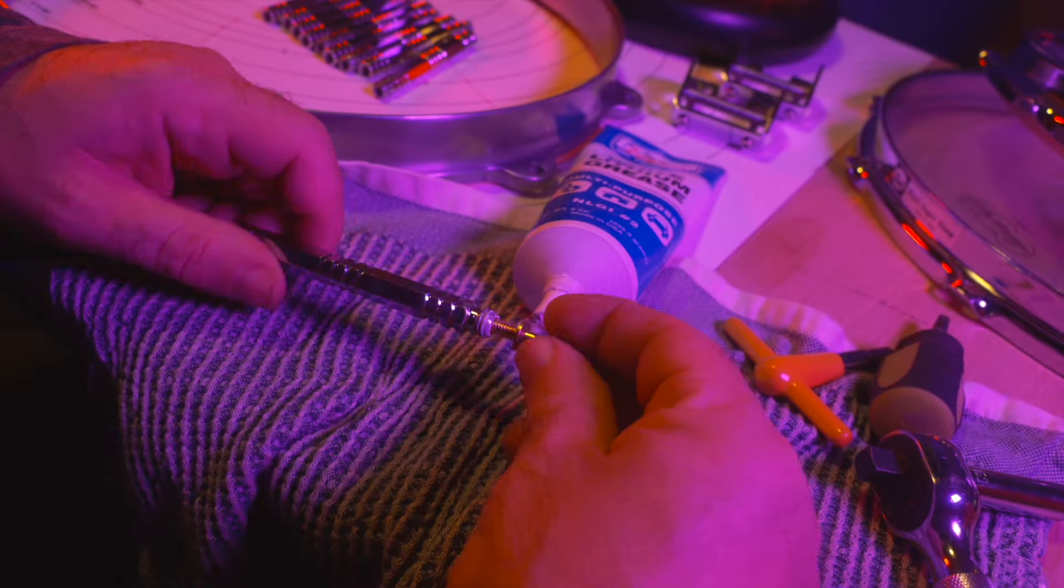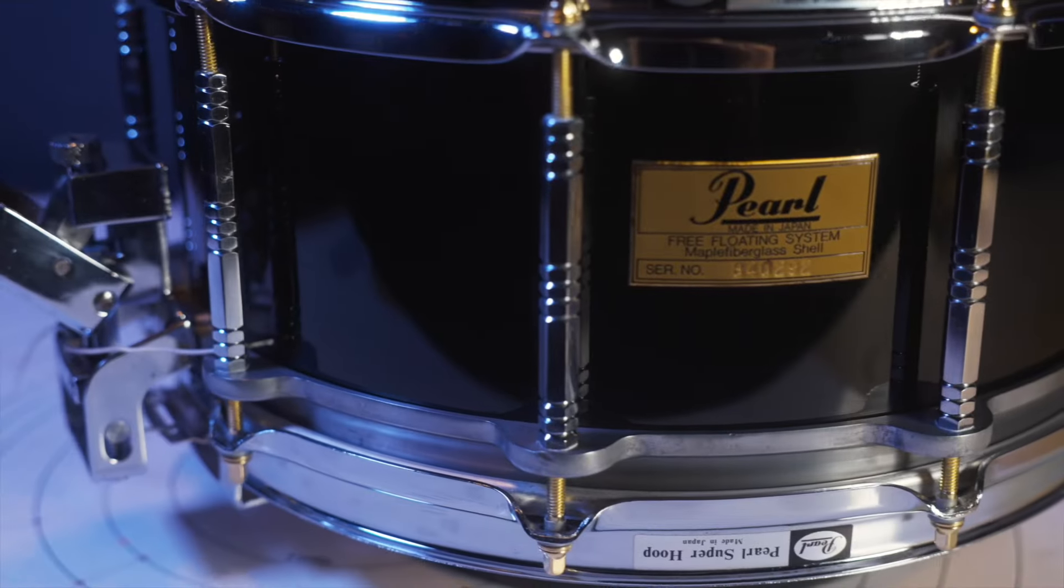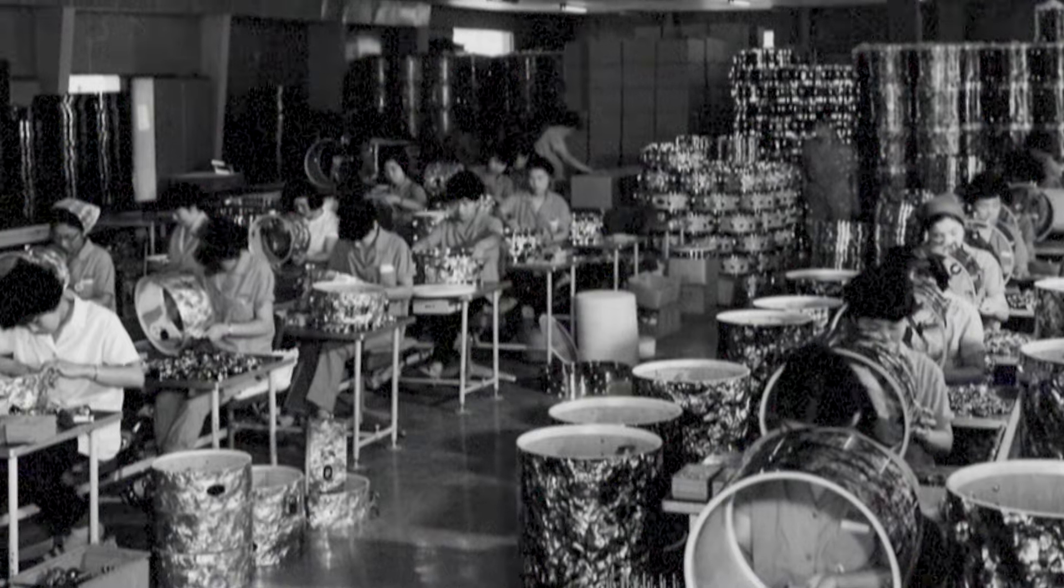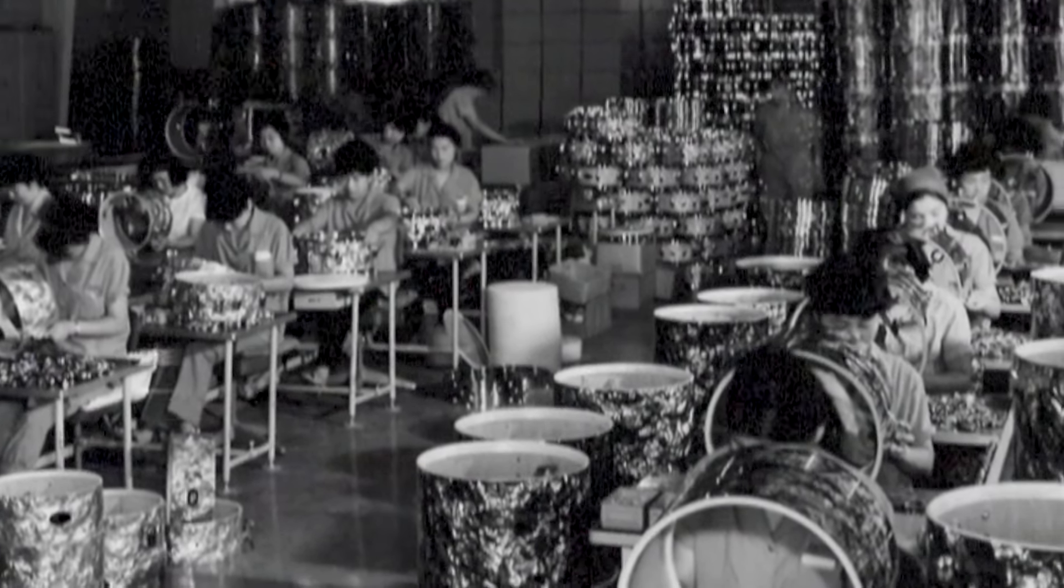I take this time to lube up all the inserts with some grease. These maple fiberglass shells have been discontinued. This drum here was built in the Chiba factory in Japan in 1985, and it's one of a kind.